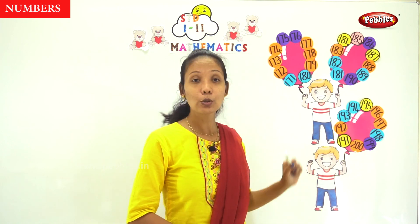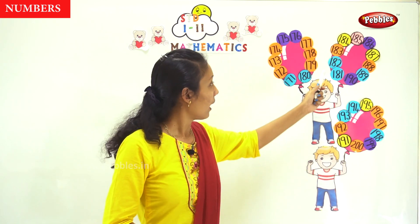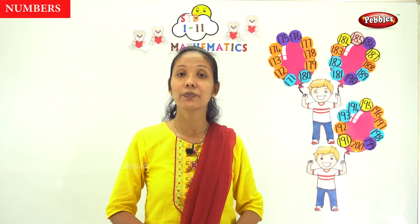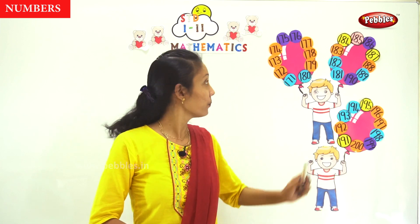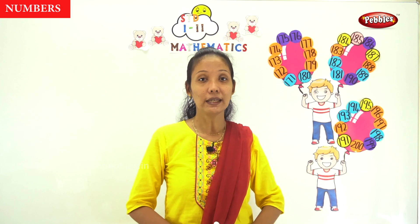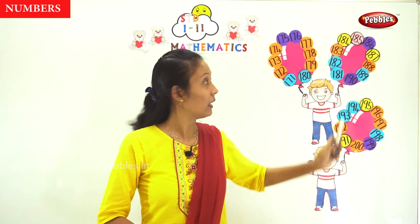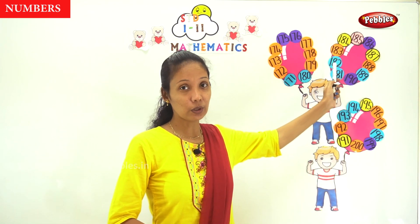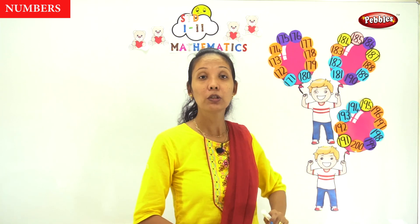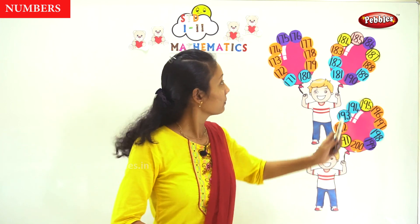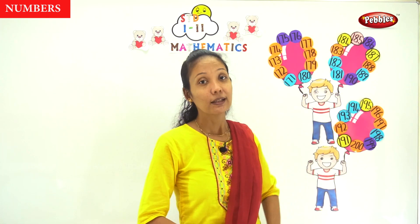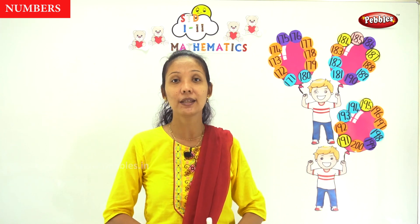That is nuthi embatthi un — 181. Nuthi embatthi rend — 182. Nuthi embatthi mon — 183. Nuthi embatthi nal — 184. Next. 185. That is nuthi embatthi un.